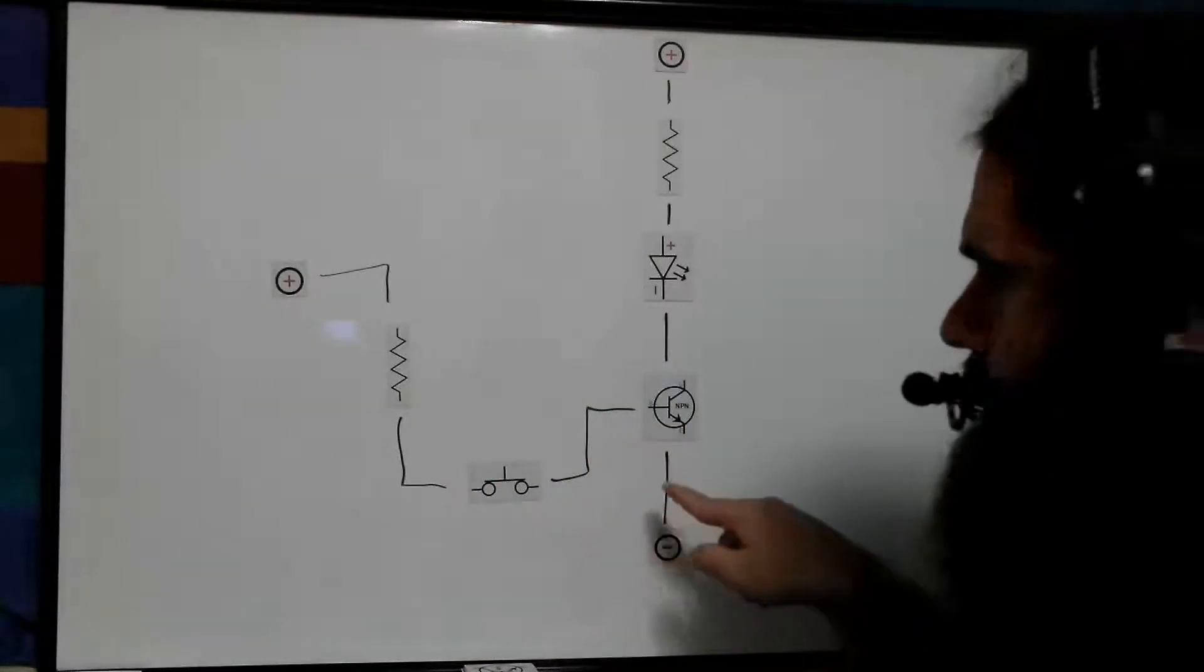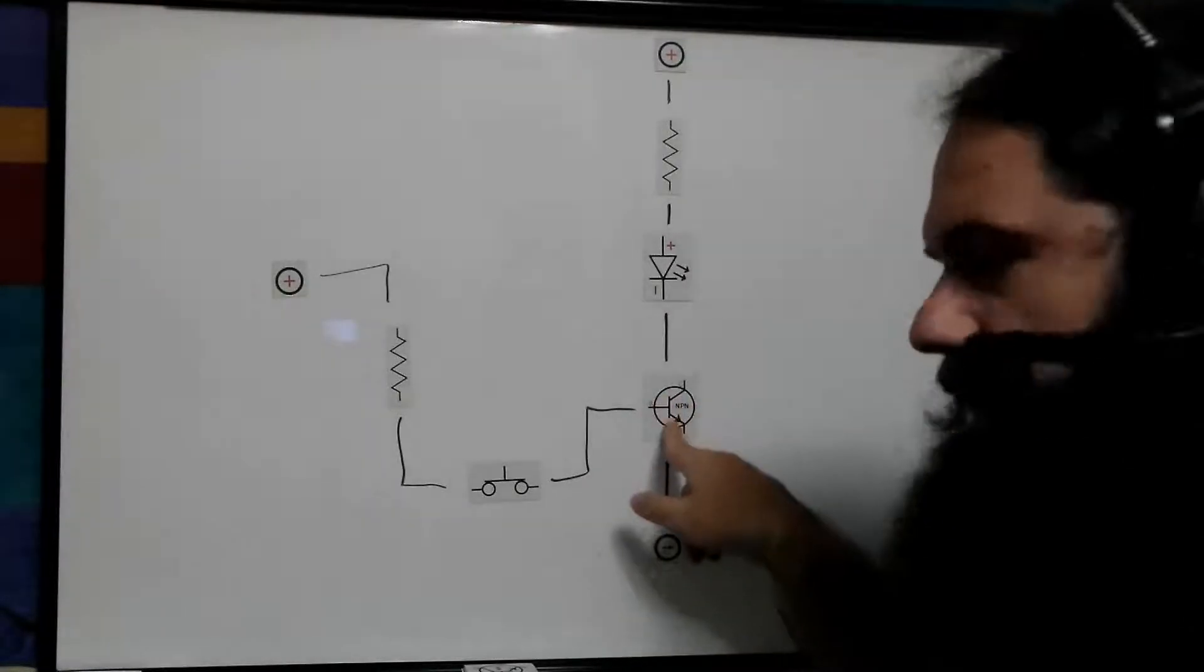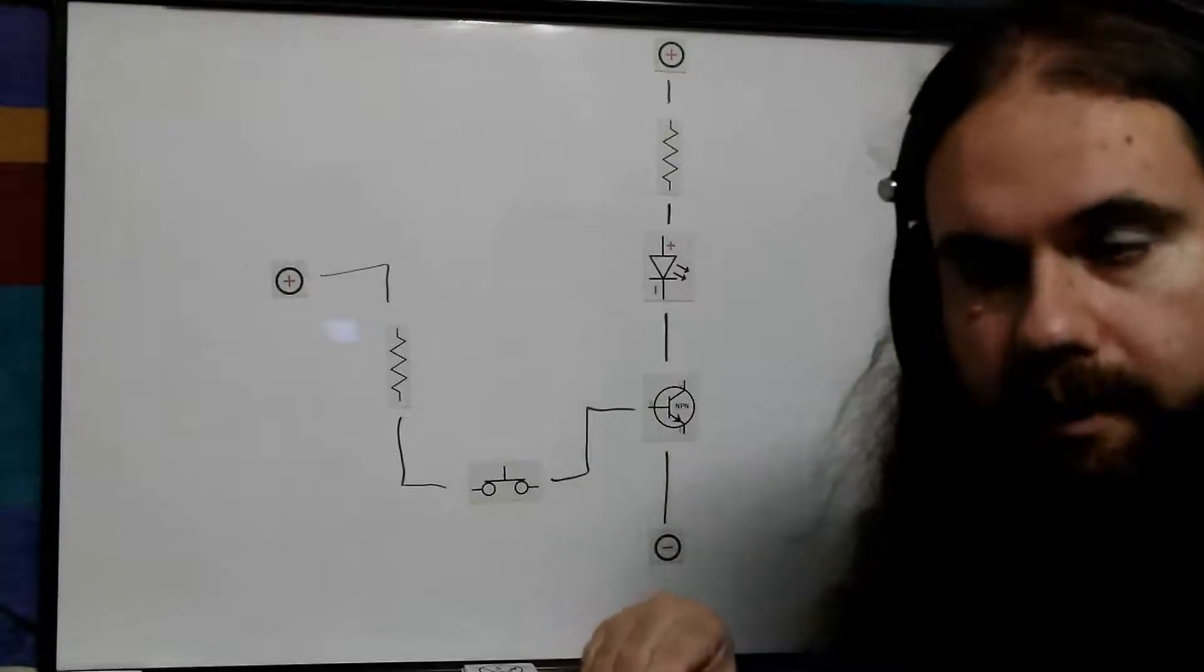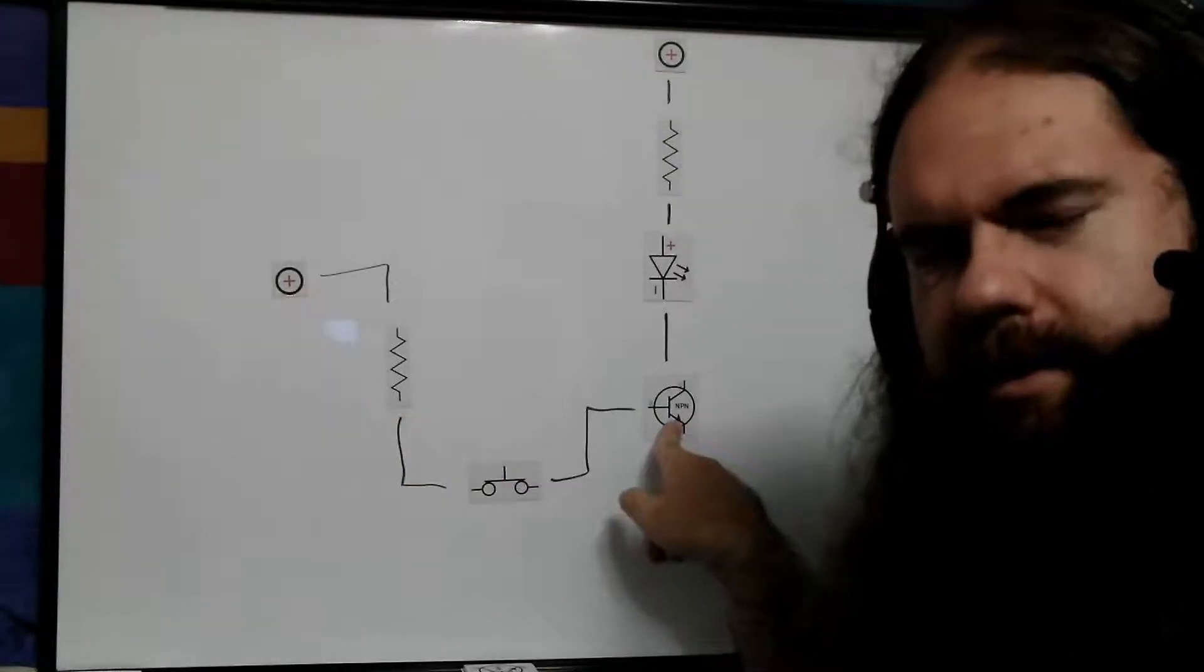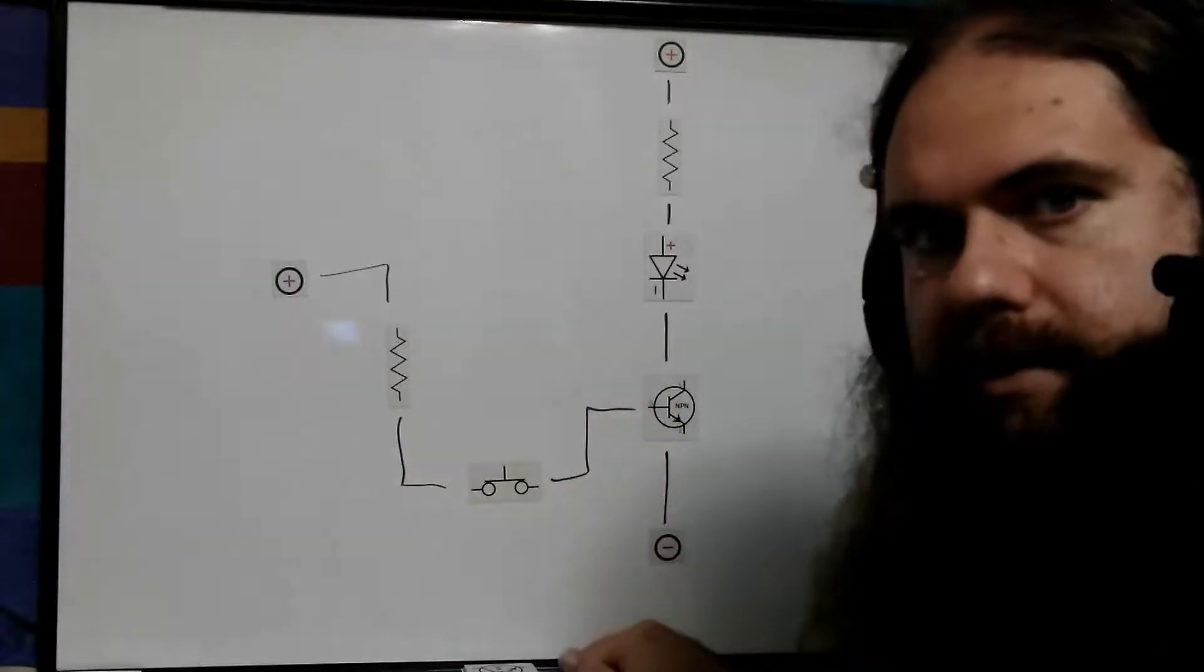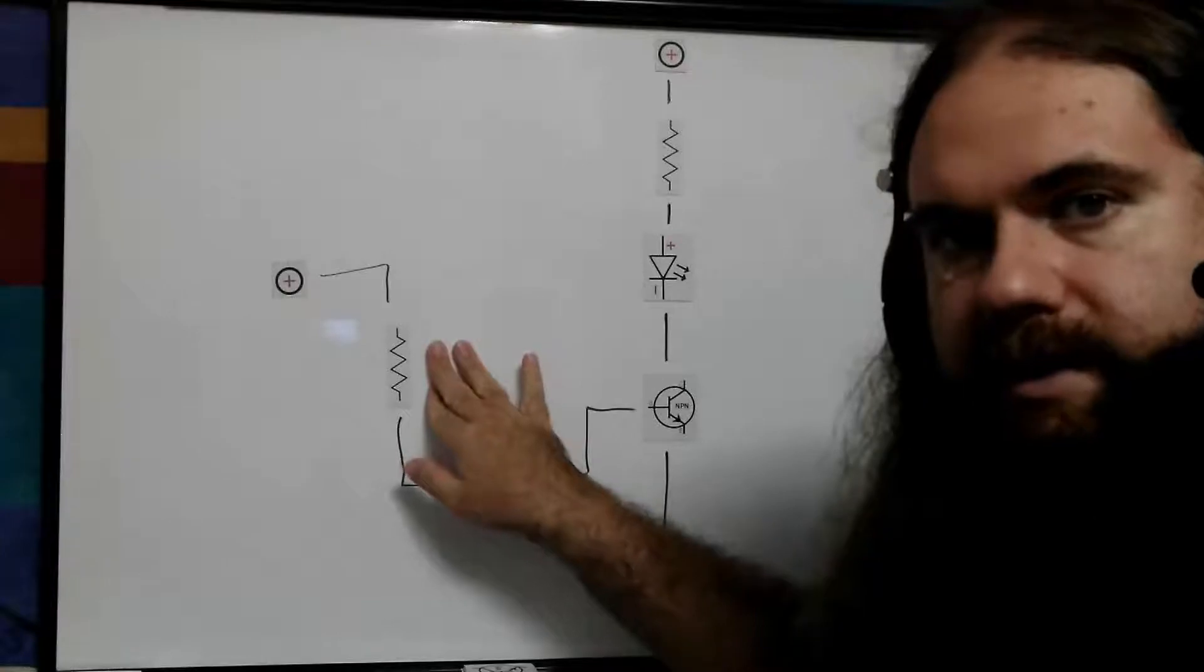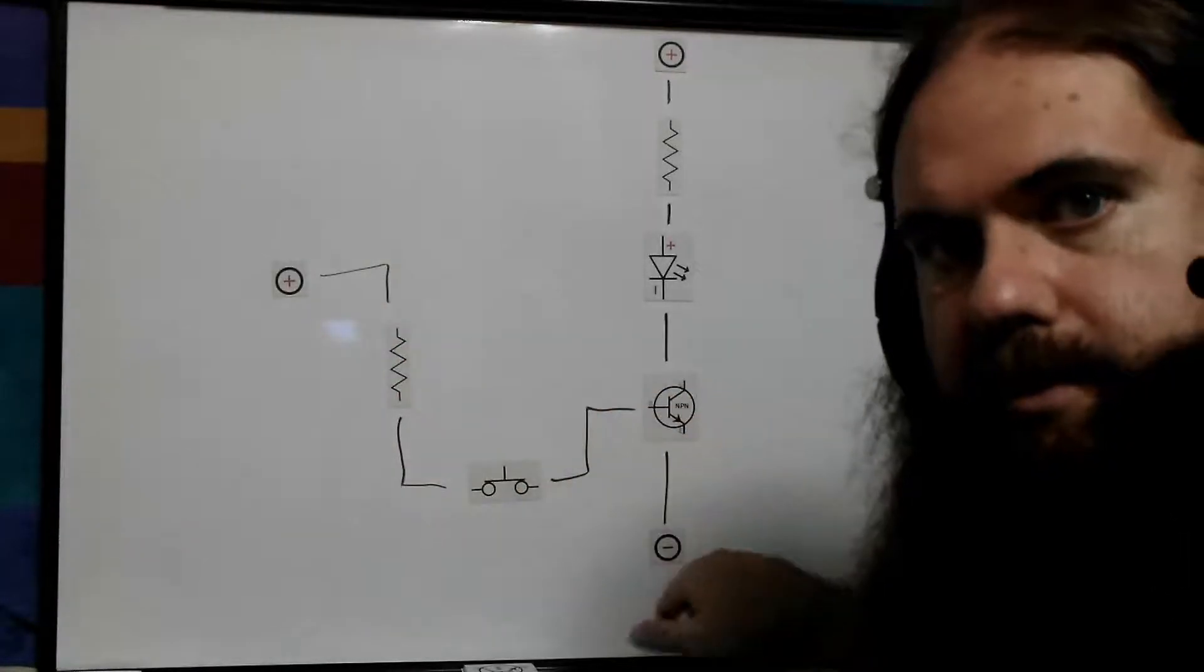They are voltage switched. You need to forward bias this junction in order to turn it on, but that only takes 0.7 or so volts. The resistor is taking the other 4.3. Once the junction is biased, the transistor does not care how much voltage is left over in the circuit.